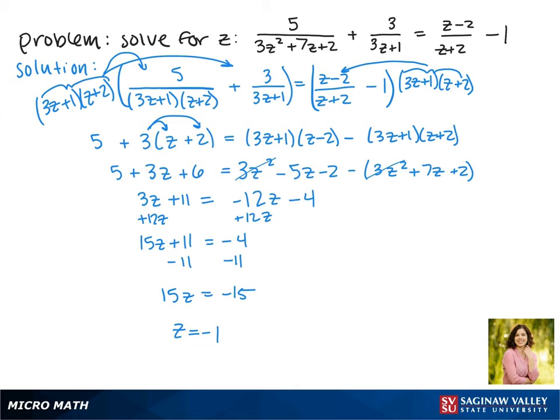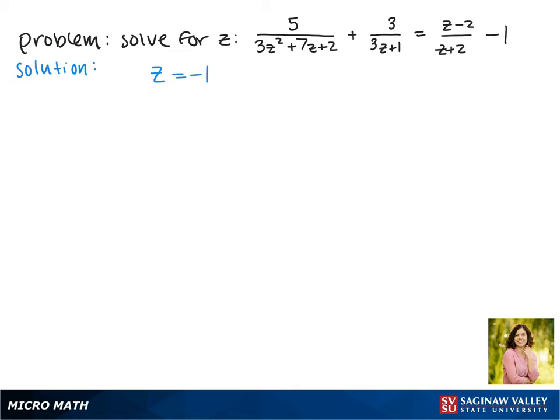Now we need to check if our solution is extraneous, which means we need to plug it back into our equation. So doing that, we have 5/(3(-1)² + 7(-1) + 2) + 3/(3(-1) + 1) = (-1 - 2)/(-1 + 2) - 1. So we need to evaluate this.